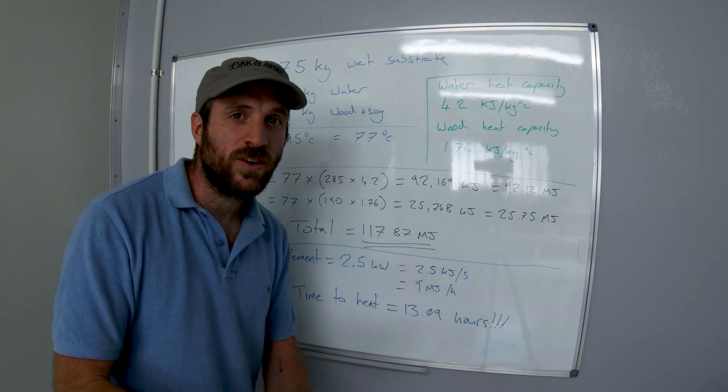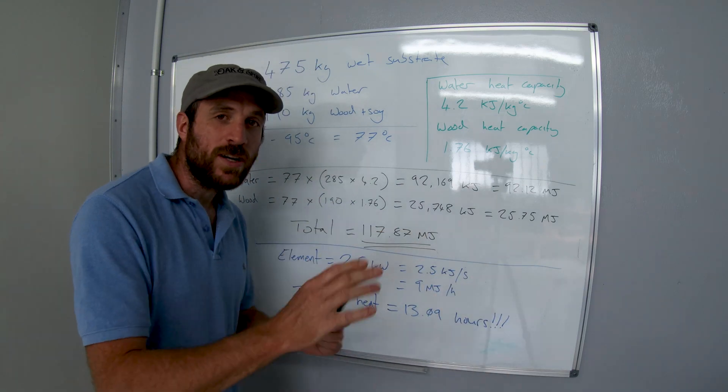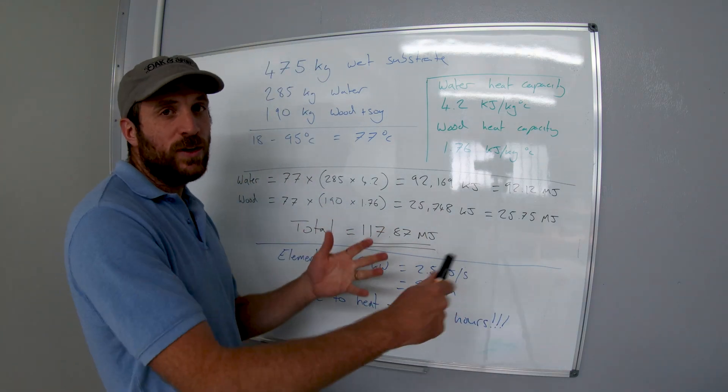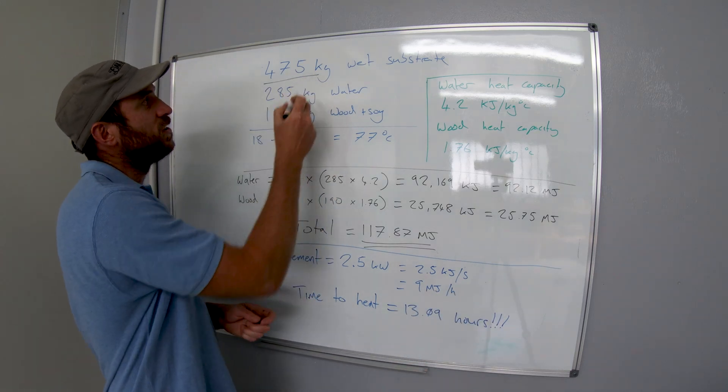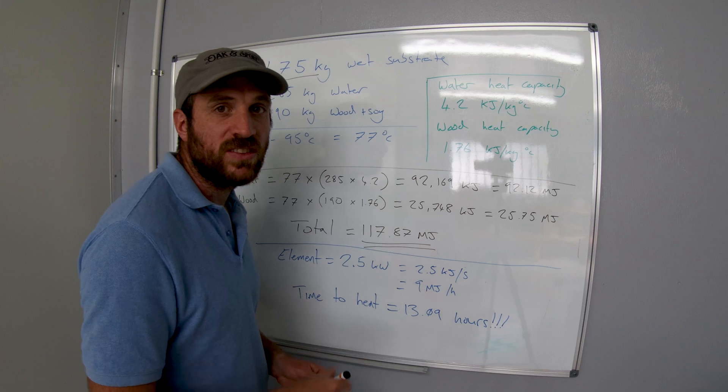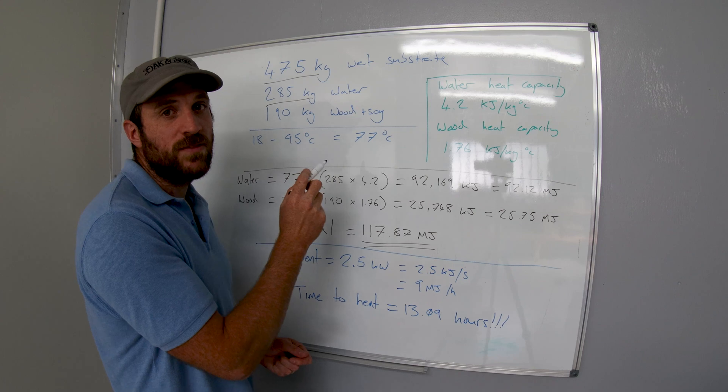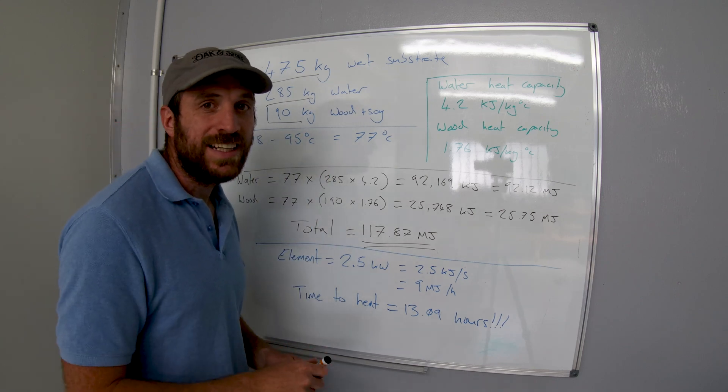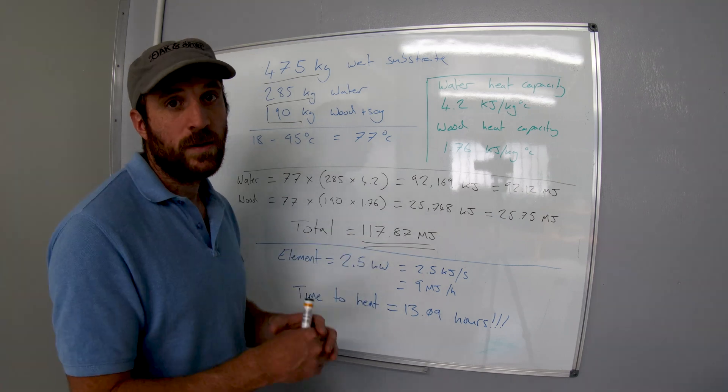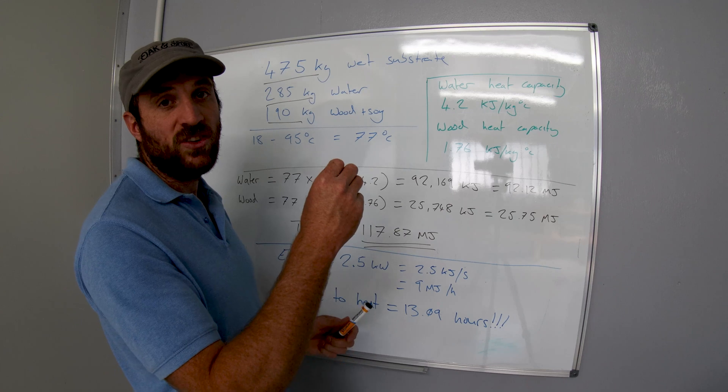So we can calculate how long it's going to take my boiler outside to heat up our substrate to that 95 degree mark. We've got 475 kg of wet substrate in my sterilizer there. 285 kg of that is water, 190 kg of that is soy hull and wood. For the purpose of this we're just going to assume that the soy hull has the same heat capacity as the wood.